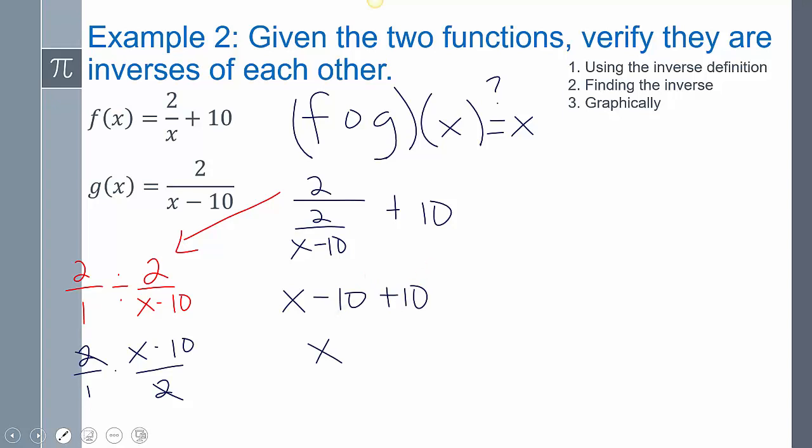And so this will simplify just into x minus 10. The negative 10 and the positive 10 cancel out. And so I'm just left with x. So they are inverses of each other. Now just remember, we should also verify g of f of x. And does that also equal x? So you do it in the reverse order.